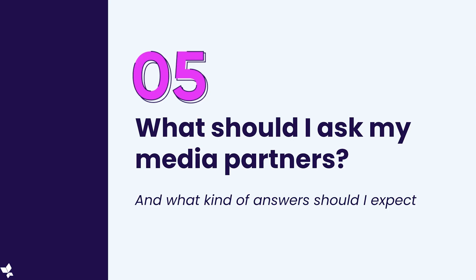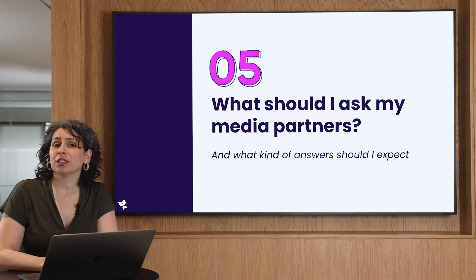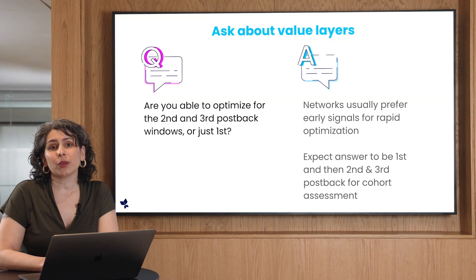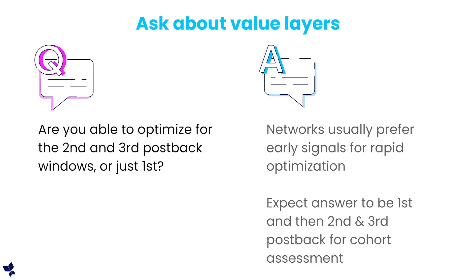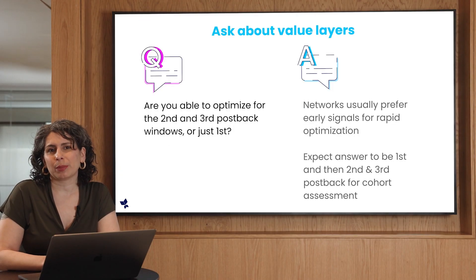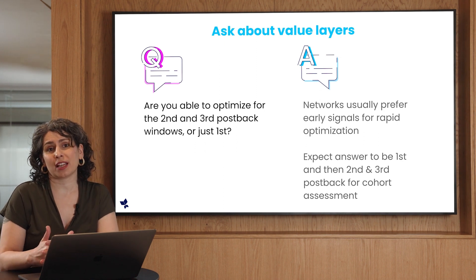Moving on to question 5: what should you ask your media partners, and what kind of answers will you get? This is a very important question, as media partners play a vital role in SKAN 4.0 and are relatively slow to adopt. You can start by asking about value layers: are you able to optimize for the 2nd and 3rd postback window, or just the 1st? Since networks usually prefer early signals for rapid optimization, you can expect they'll say 1st postback, and then 2nd and 3rd postback for cohort assessment.